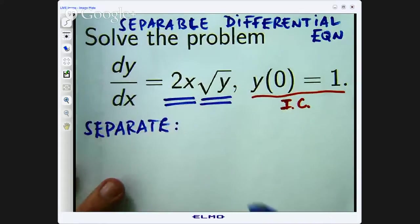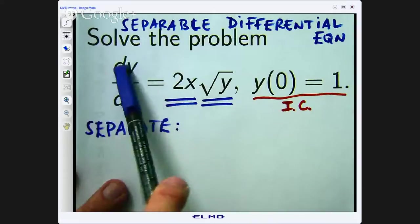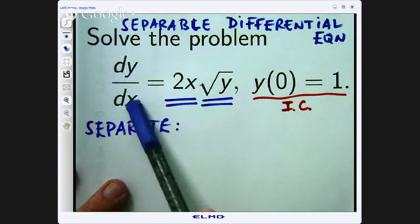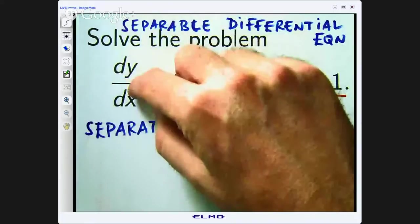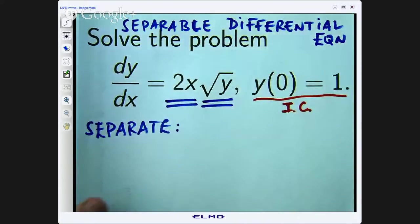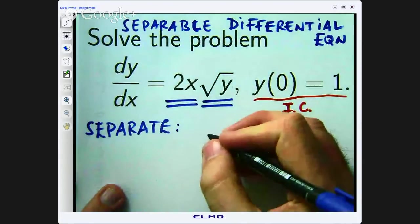Okay, so let us get all the y's and the dy's on the left hand side and all the x's and the dx's on the right hand side. So you are going to bring that root y down there and that dx up there. So you get something like this.